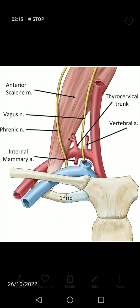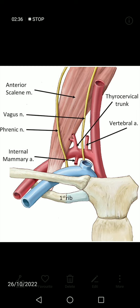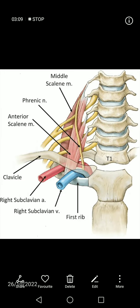As you can see in the diagram, anterior to the first part of the subclavian artery are the vagus nerve, internal jugular vein, subclavian vein, common carotid artery, sternocleidomastoid muscle, sternothyroid, and sternohyoid muscles. Anterior to the second part is the scalenus anterior muscle, and also the phrenic nerve. Anterior to the third part is the middle one-third of the clavicle and the posterior border of sternocleidomastoid.